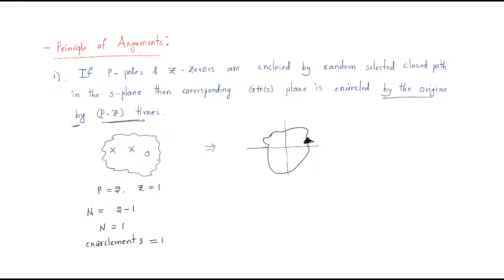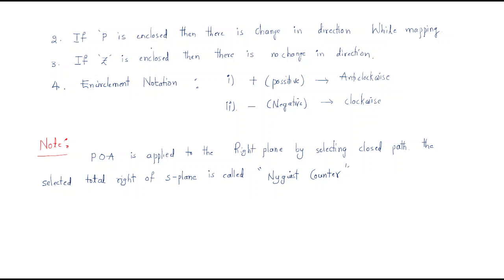These encirclements are useful in finding stability. When P poles are enclosed, there is a change in direction while mapping. When Z zeros are enclosed, there is no change in direction. So P and Z together determine the direction of the encirclements.